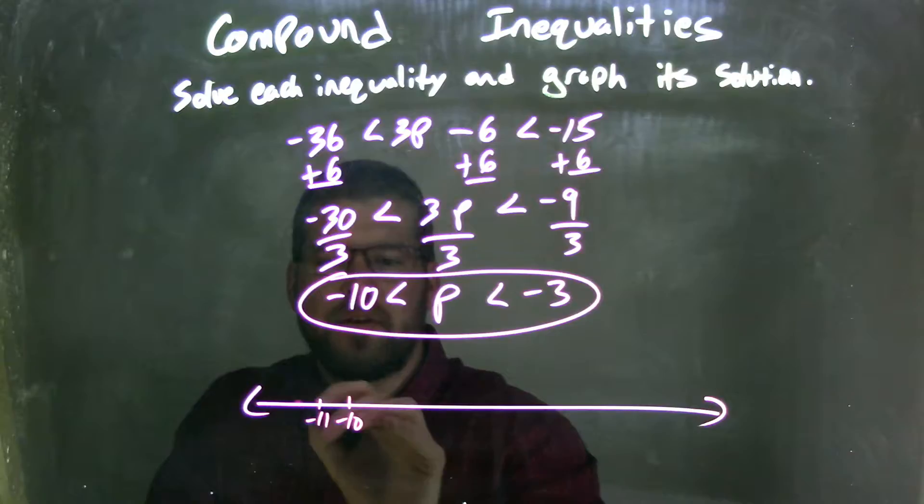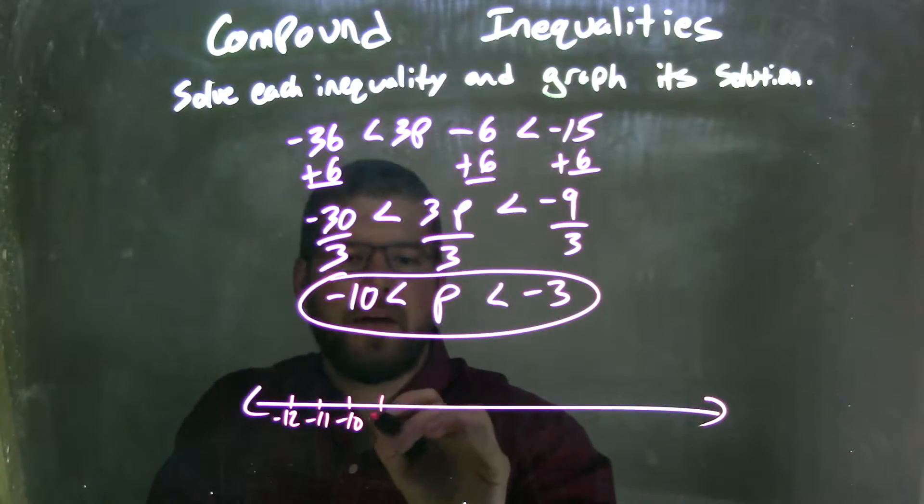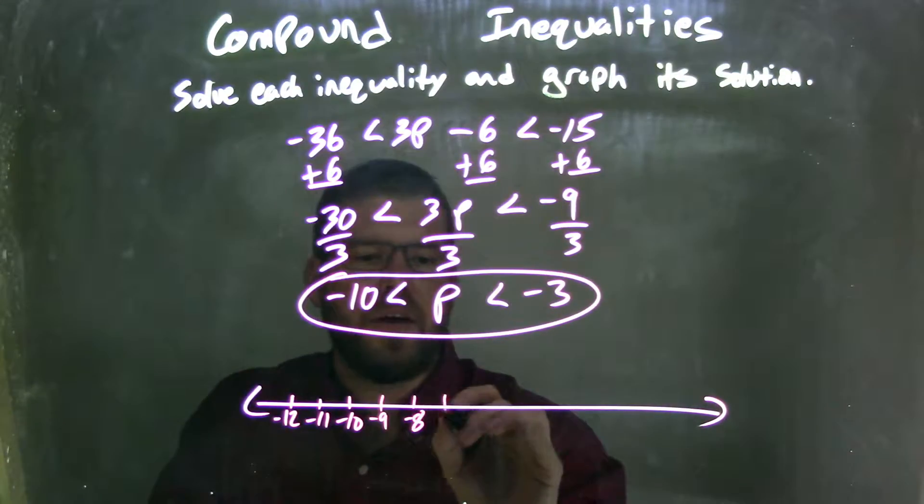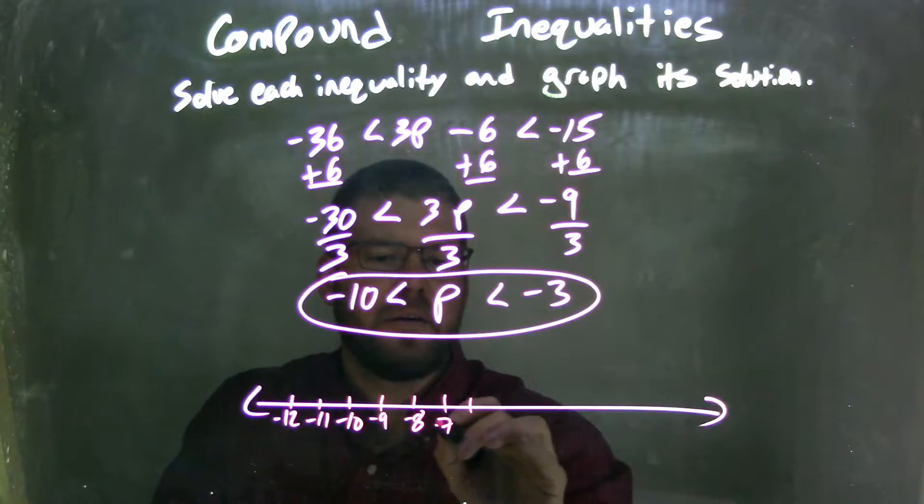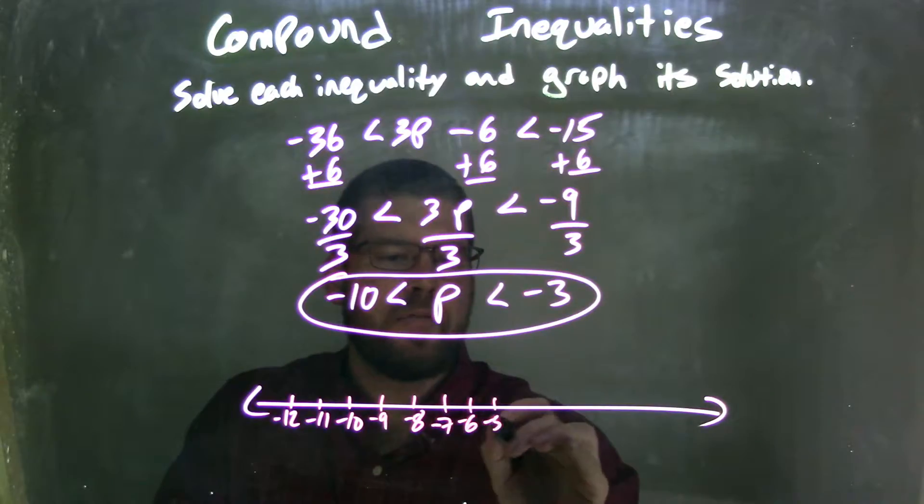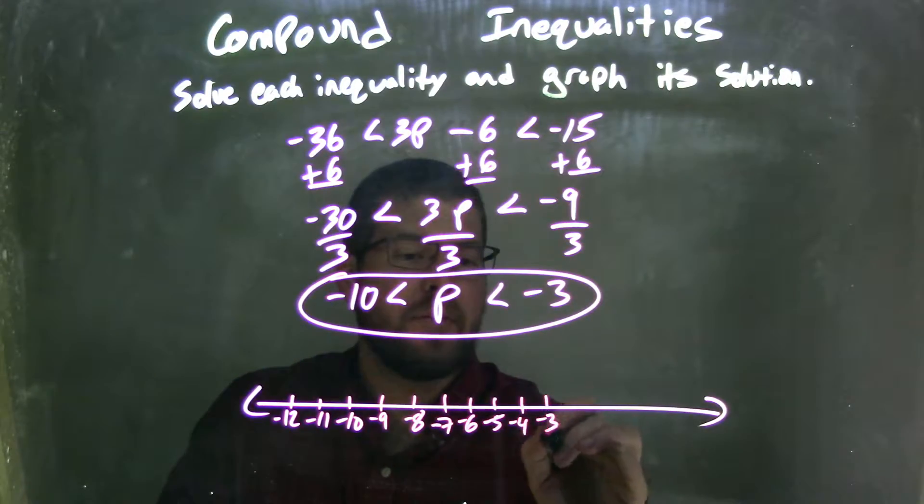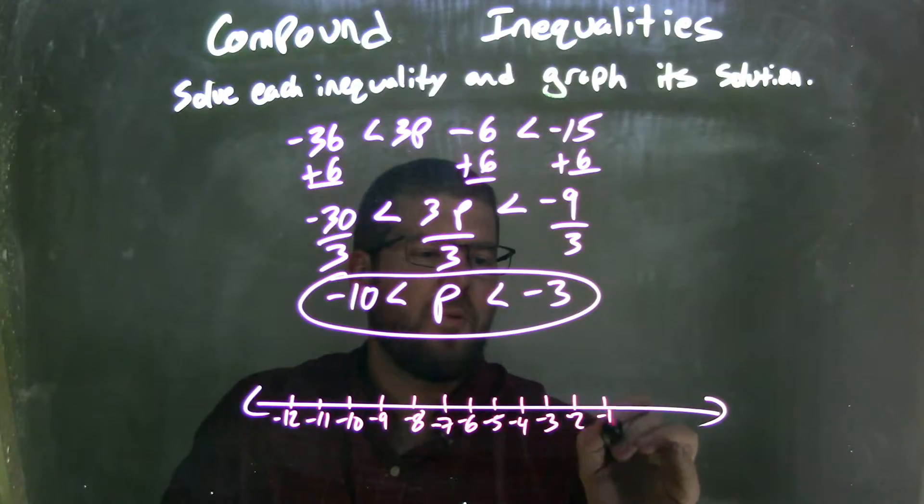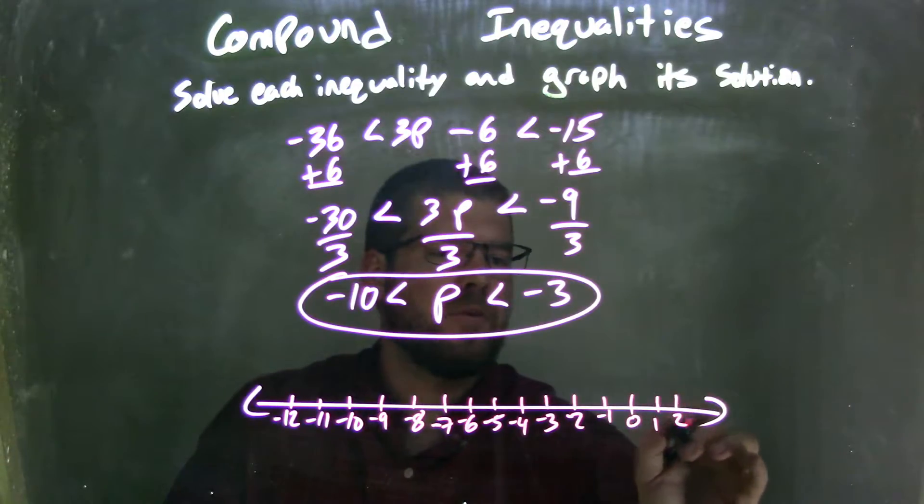Let's go by 1, so negative 11, negative 12, and then we have negative 9, negative 8, negative 7, negative 6, negative 5, negative 4, negative 3, negative 2, negative 1, 0, 1, 2.